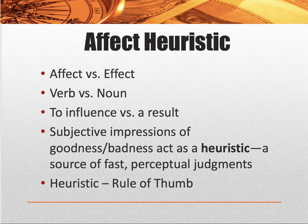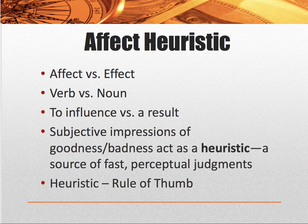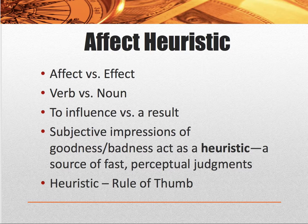The effect is the result of what the affect has produced — effect is the noun, the result, while the verb is to influence, to have the affect. So the subjective impressions of goodness or badness act as a heuristic. They are a source of fast perceptual judgment. We know heuristics are a rule of thumb, so the affect heuristic is an impressionistic, influencing example of how we're shaped by rules of thumb.